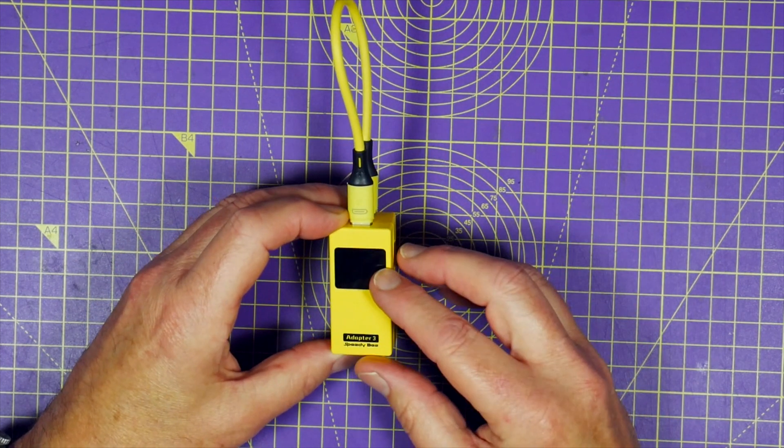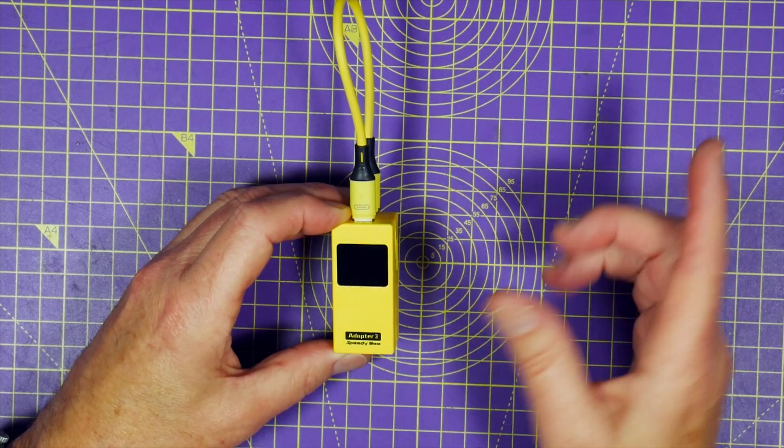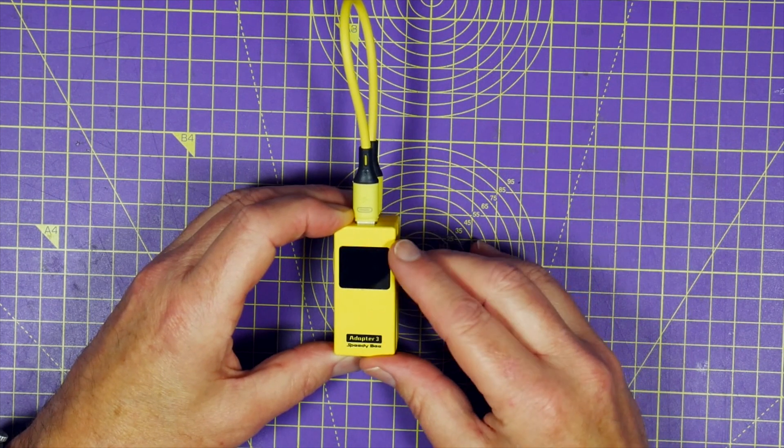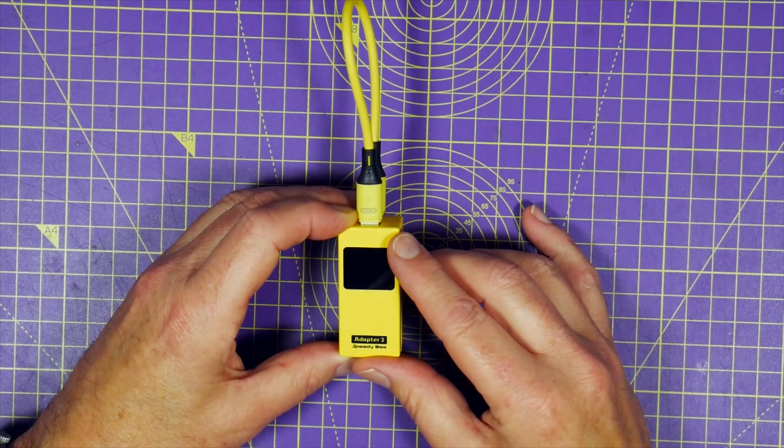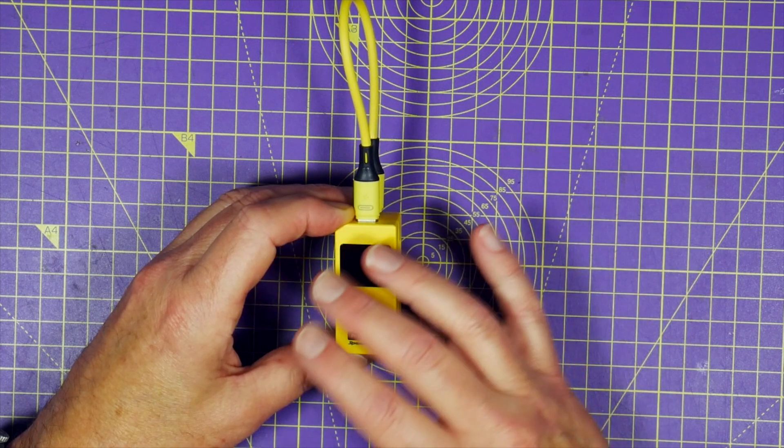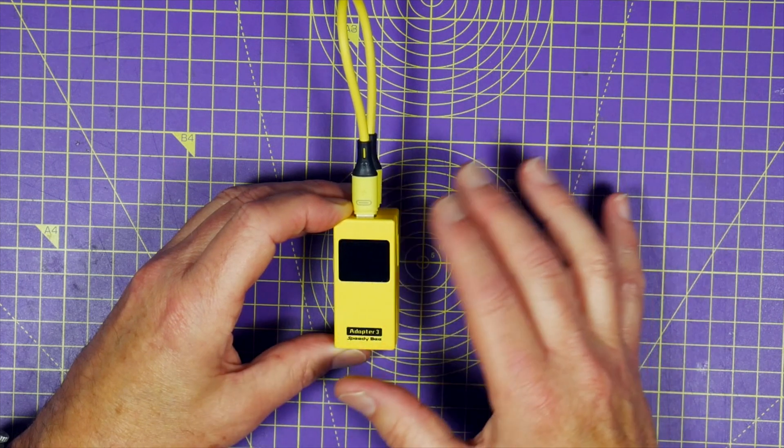You can download your blackbox logs and analyze them in the SpeedyBee app directly. And as I showed in this video up here, the app has also got BLHeli32 and BLHeli-S built-in support, so you can do all your ESC setup and changing motor direction is just dead easy.